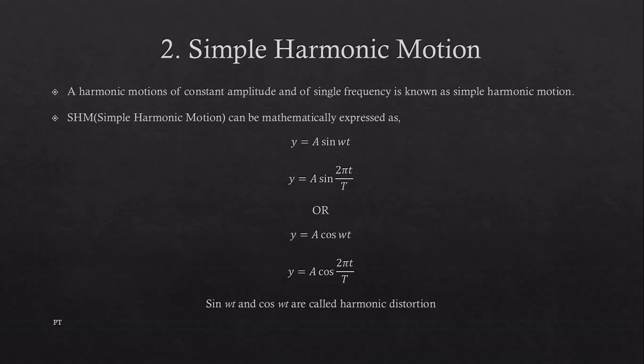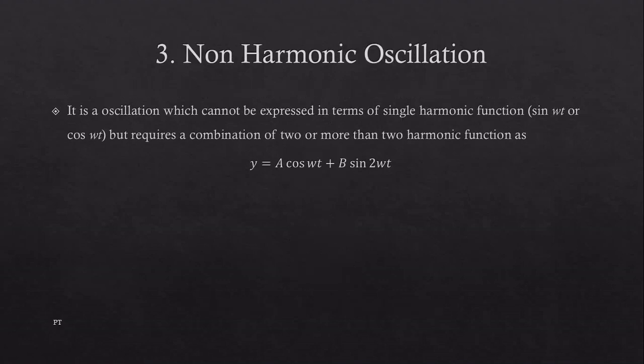Simple harmonic motion: a simple harmonic motion of constant amplitude and single frequency is known as simple harmonic motion. It can be mathematically expressed as y = A sin(ωt), y = A sin(2πt/T), where capital T represents the total time and small t is the instantaneous time, or we can also write y = A cos(ωt), y = A cos(2πt/T). Here sin(ωt) and cos(ωt) are called harmonic distortion.